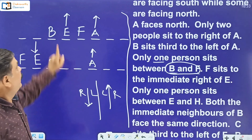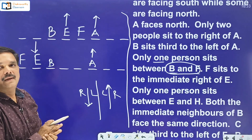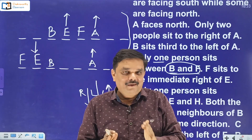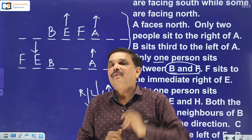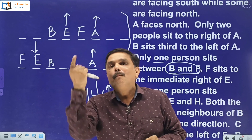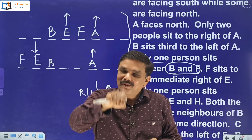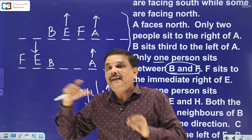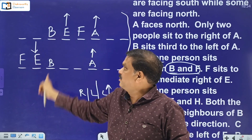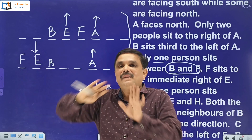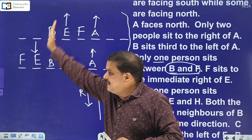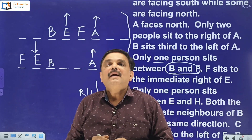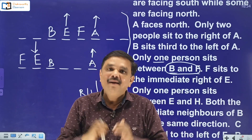Notice: in one possibility E is facing north, in the other possibility E is facing south. Between these two possibilities, any one must be correct — though in rare cases for high difficulty level exams, both arrangements may remain possible. In such cases, examiners may frame questions like 'if E is facing south, which of the following is true?' or 'if E is facing north, which is definitely false?' Keep this in mind.